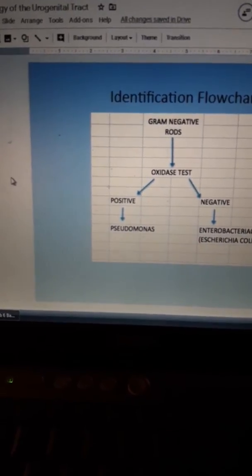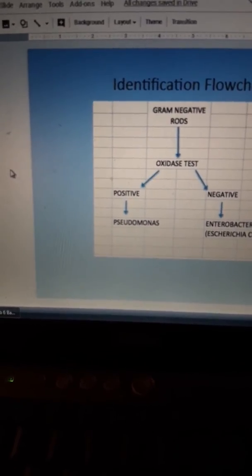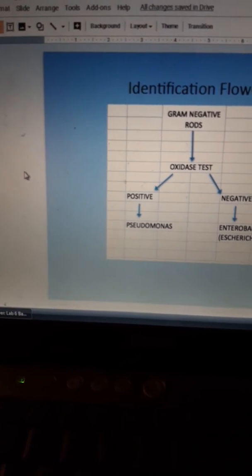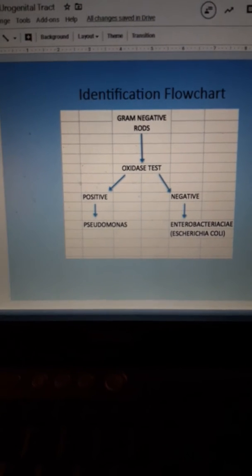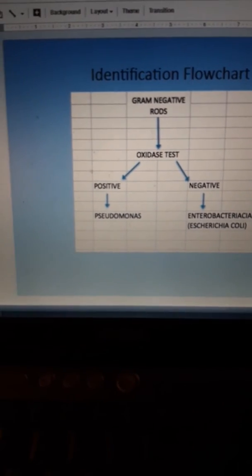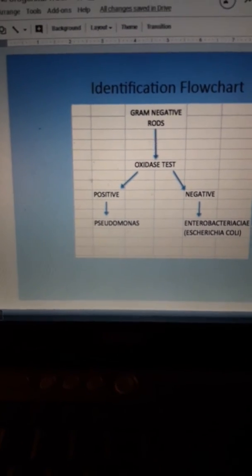And just like gram-positive cocci, we had an enzyme test called catalase. Remember, depending on the catalase it was staph and strep. Now we have another enzyme test called oxidase. Remember it always ends in -ase when it's an enzyme. So we're going to do a quick swab test.